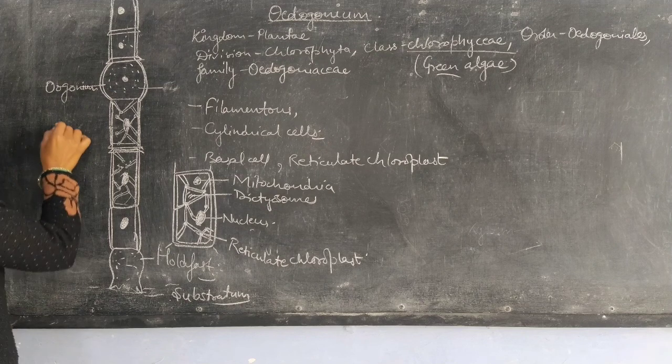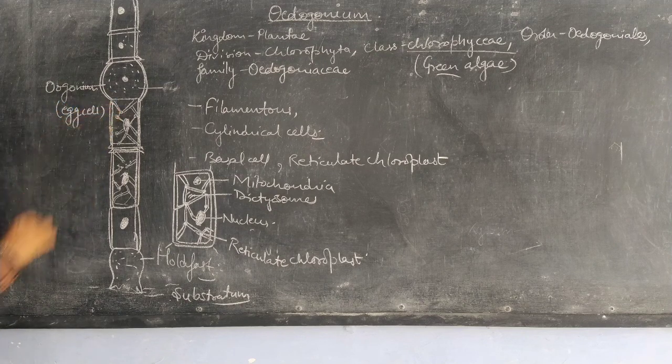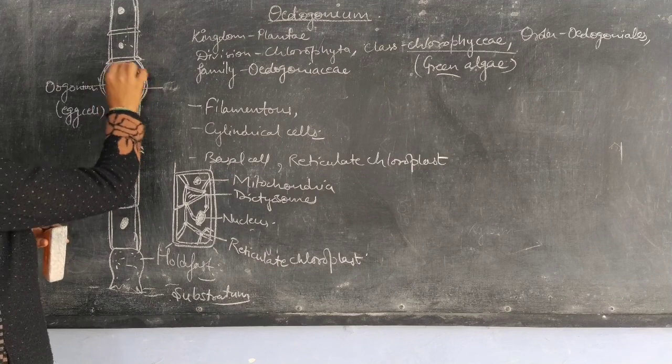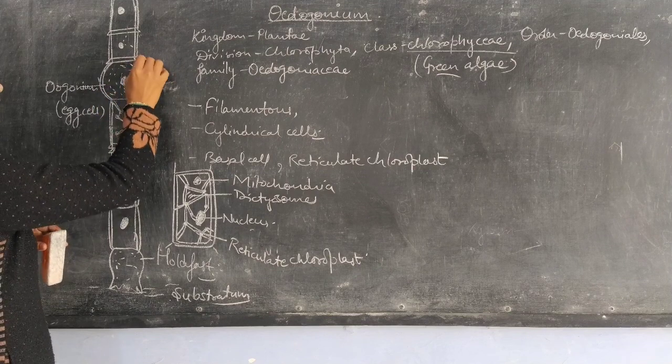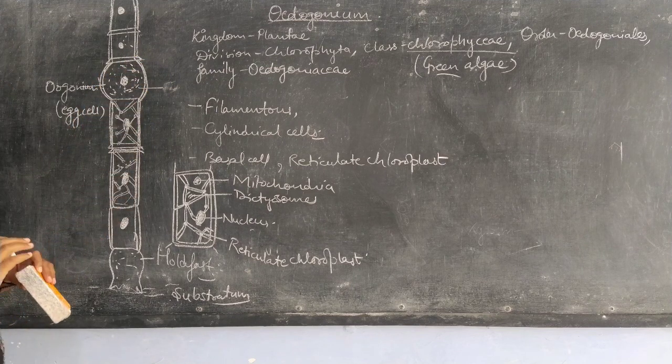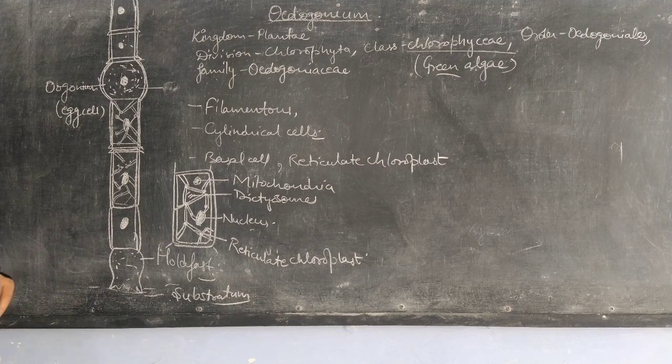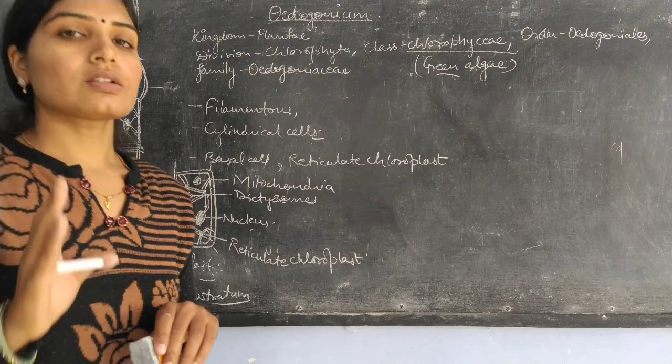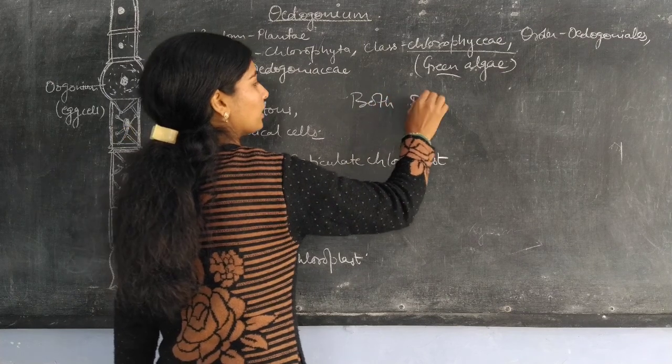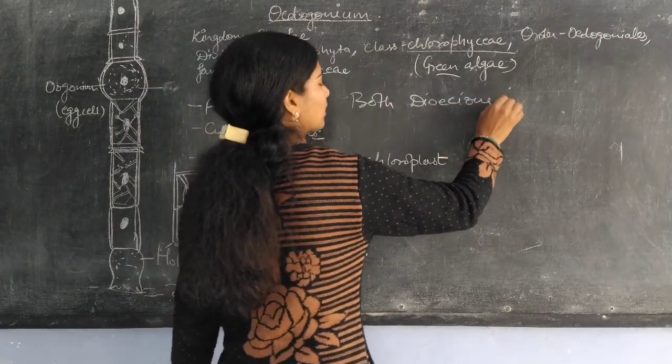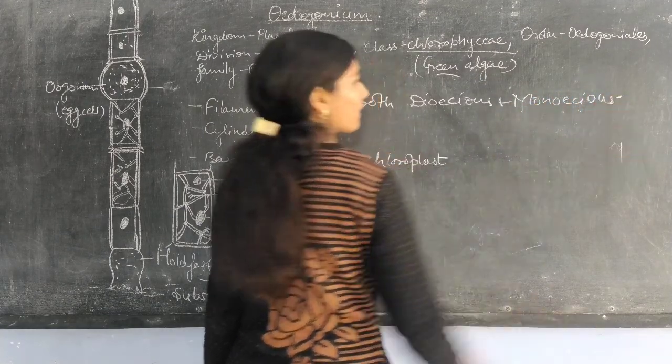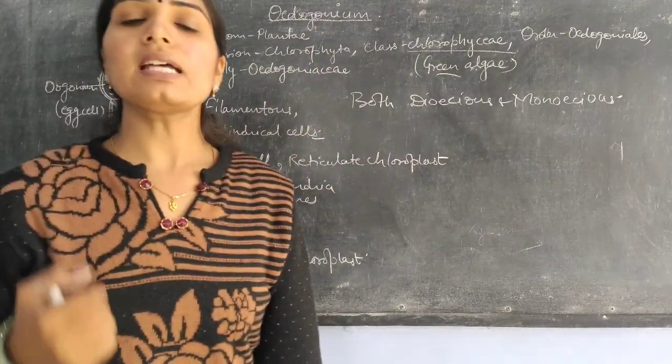Oedogonium has a large nucleus and preserved food material in the chloroplast. It is found either on the same filament where antheridia are present, or on a different filament where antheridia are absent. So this Oedogonium is both dioecious and monoecious. Both types of species are present here, dioecious as well as monoecious.